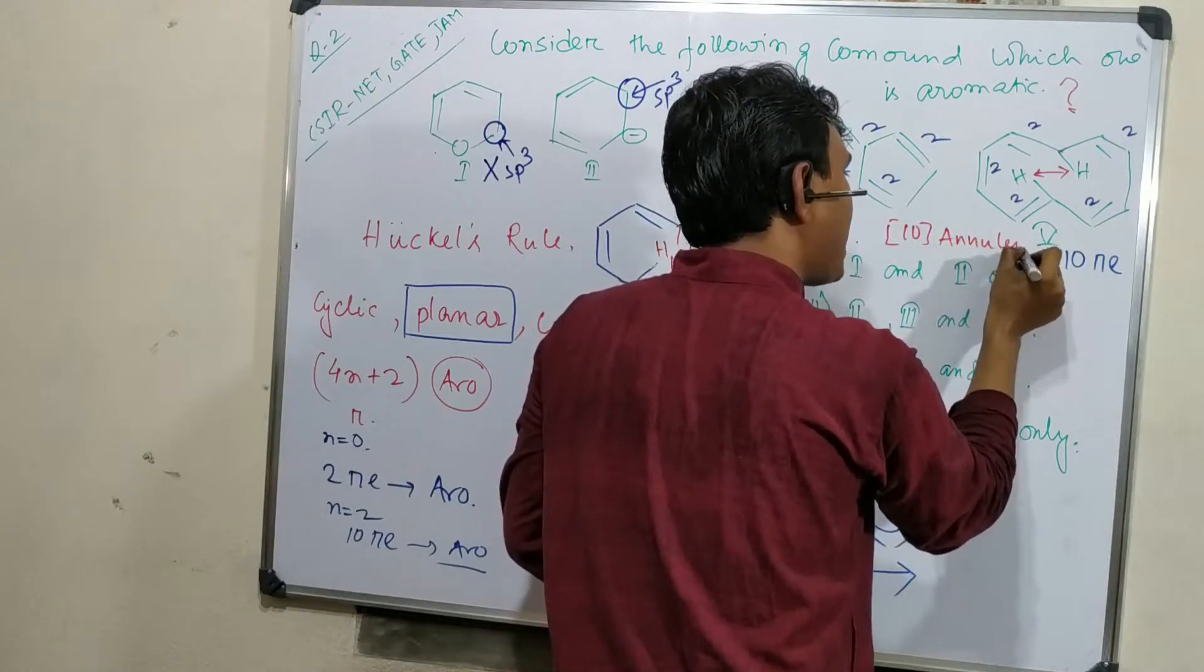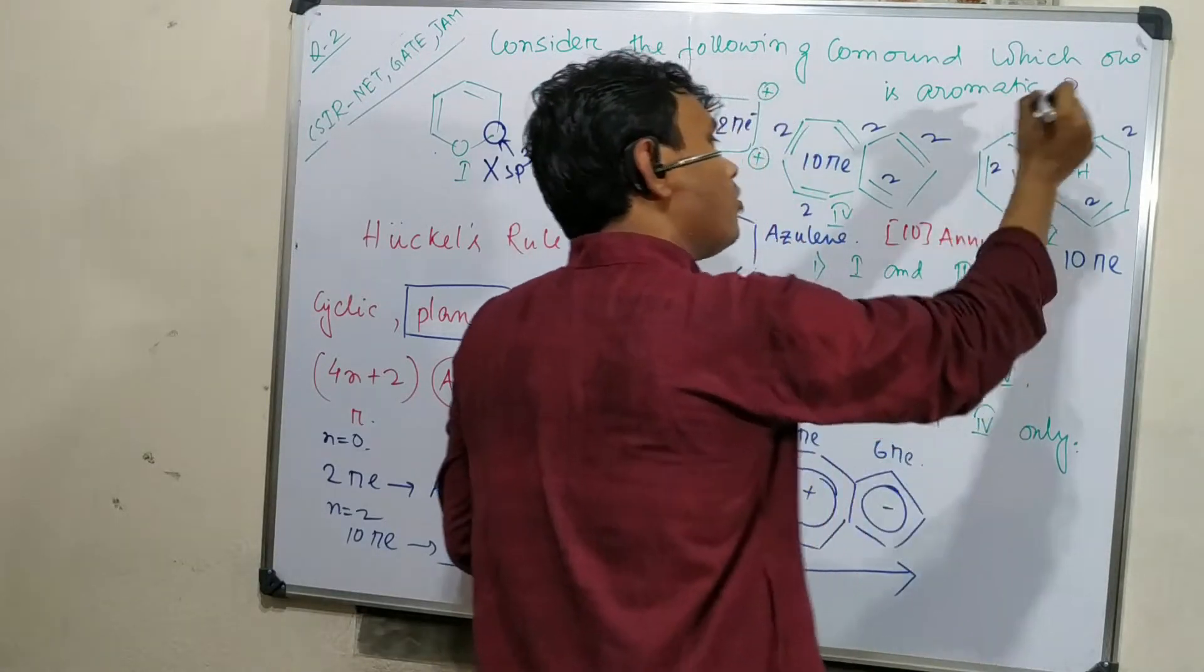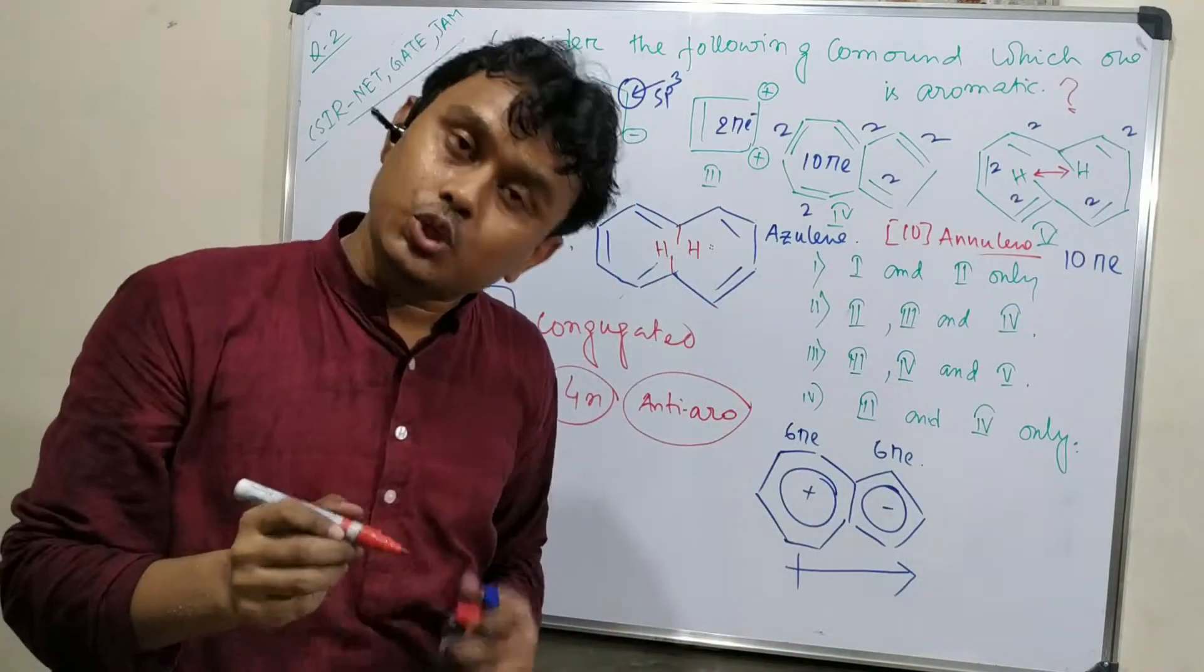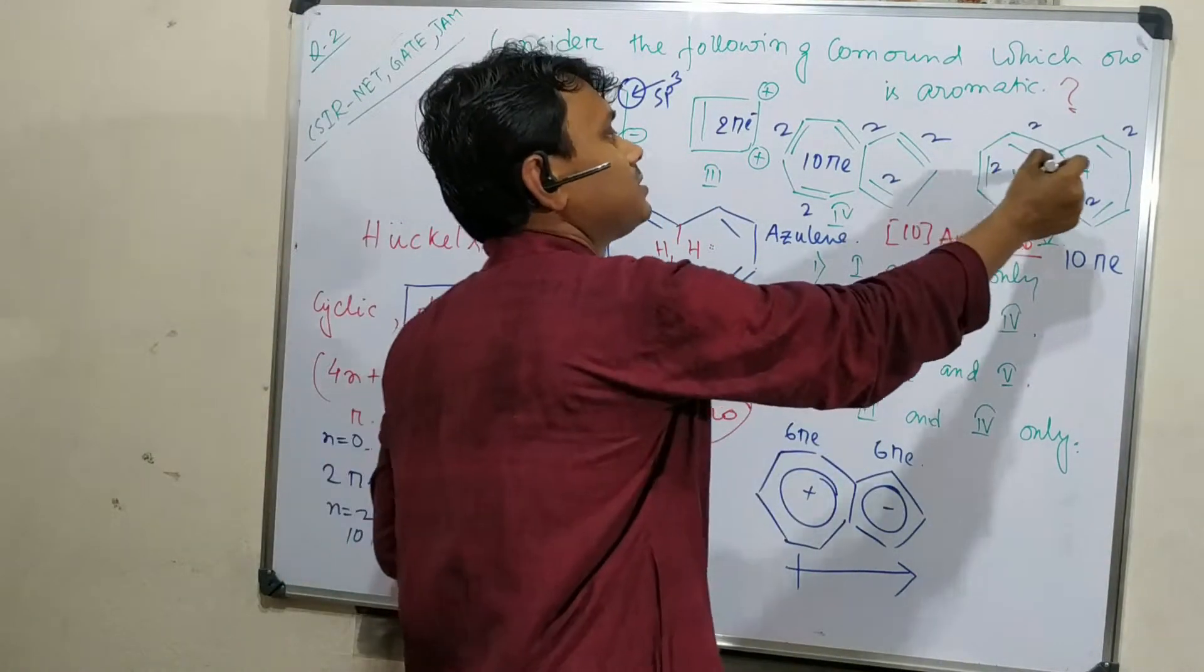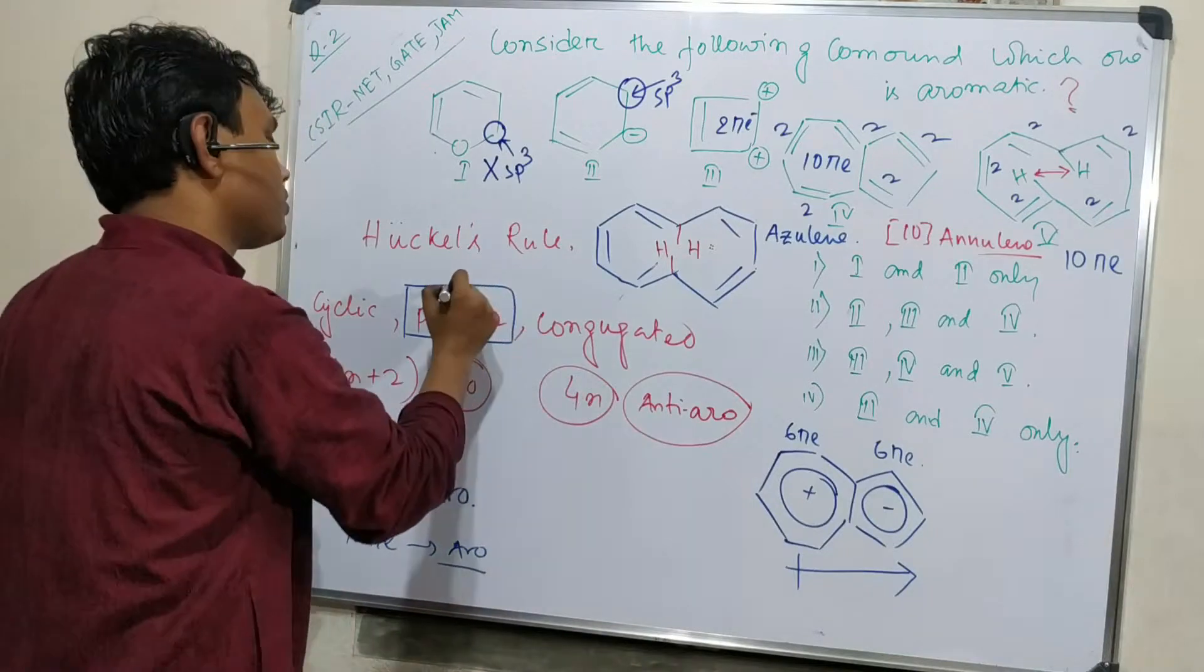So this is actually 10-annulene. From all the criteria it should be aromatic, but due to this repulsion, this deviates from planarity, consequently this is not aromatic.